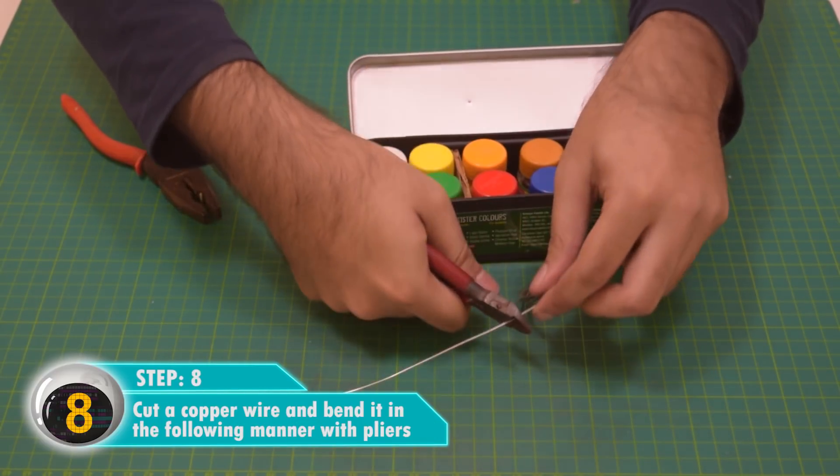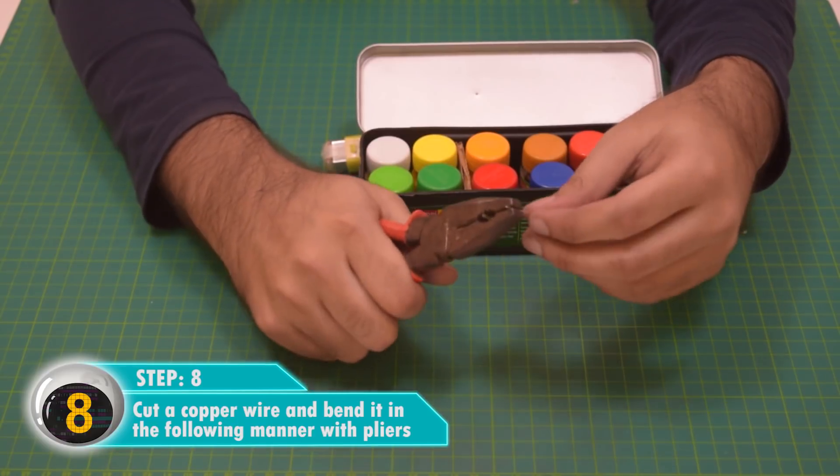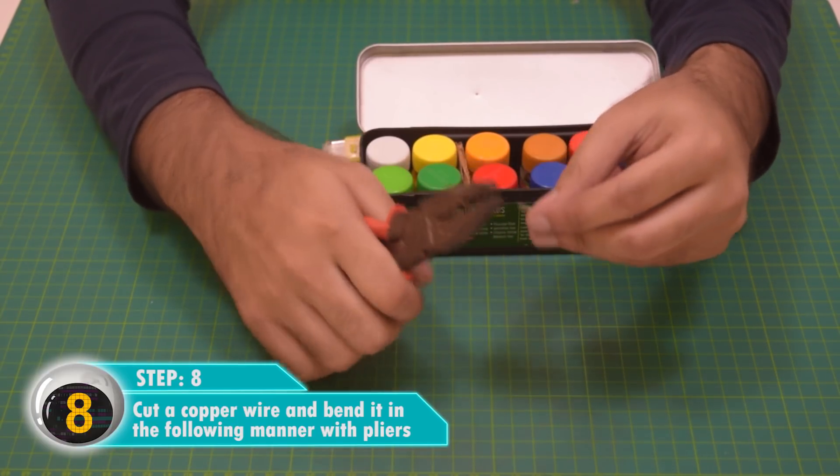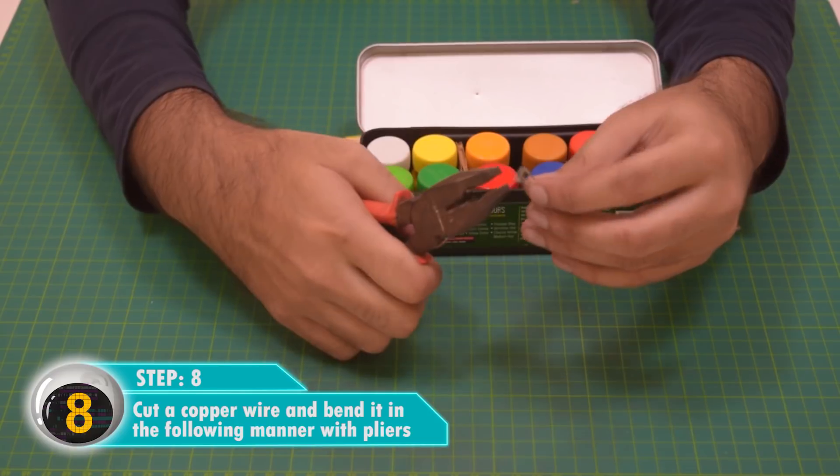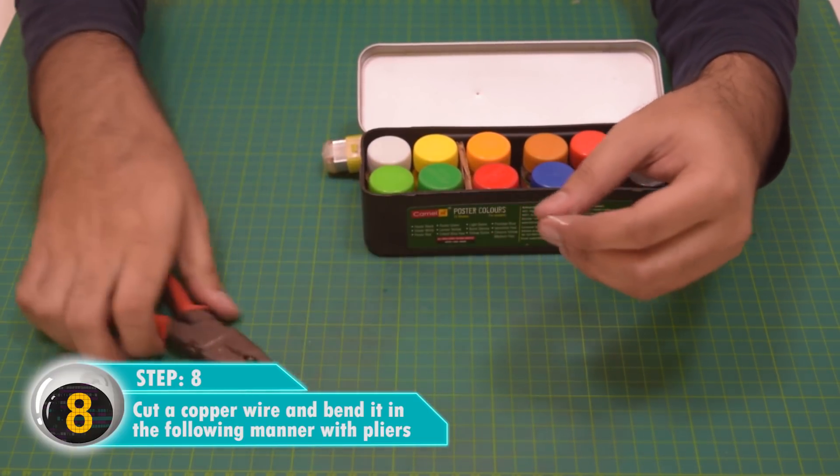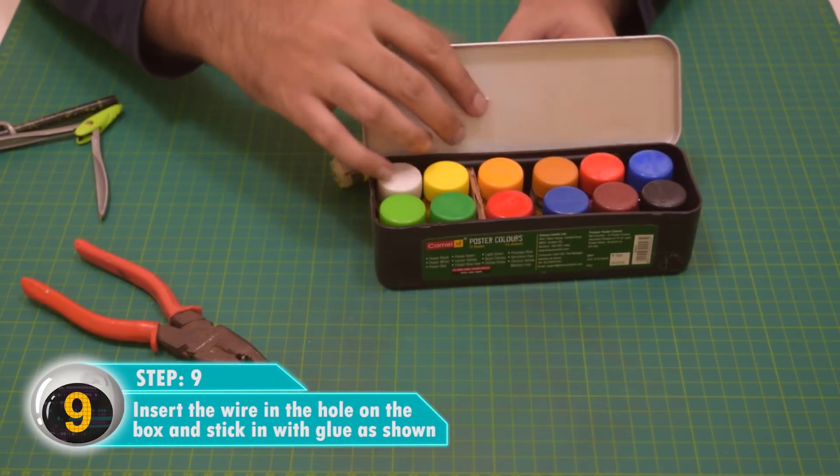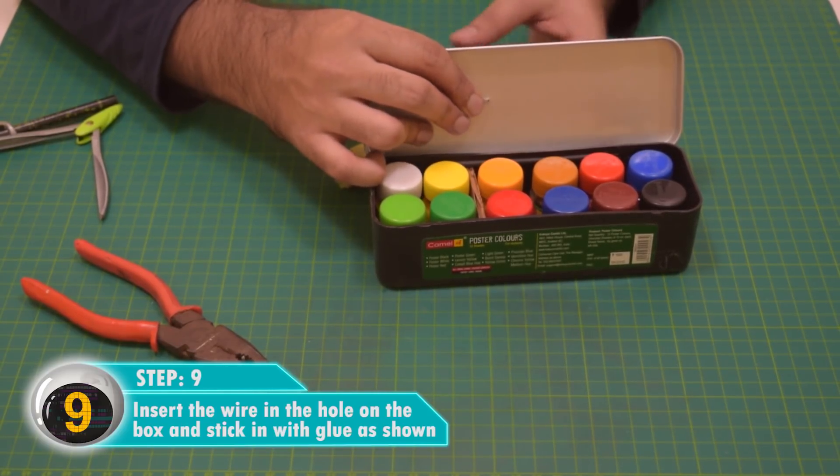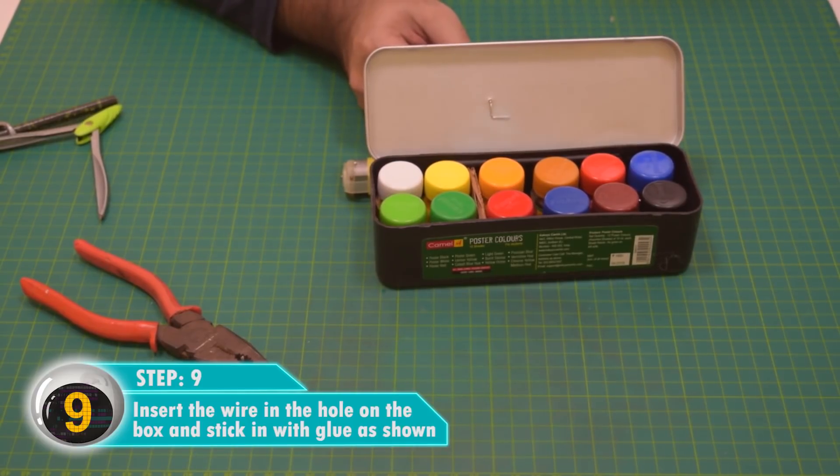Cut a copper wire and bend it in the following manner with pliers. Again, be very careful because you're handling very sharp pointing objects. Make sure that you're folding it in the way that is shown. It's not all on one axis. Insert the wire in the hole on the box and stick it with the glue as shown.